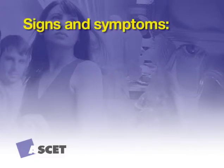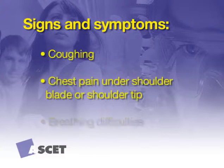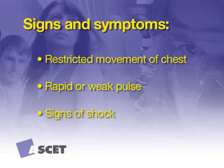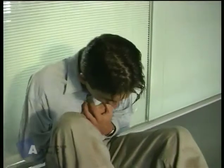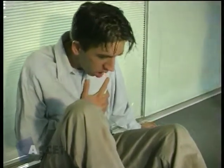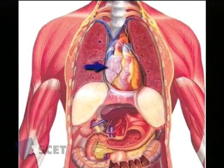Signs of pneumothorax are coughing, chest pain often under the shoulder blade and/or a sharp pain in the shoulder tip on each attempt to breathe, breathing difficulties especially the inability to take a full or deep breath, restricted or absent movement of the chest wall on the affected side, a rapid or weak pulse, and signs of shock. As the air continues to enter the pleural cavity, a tension pneumothorax can develop, and the victim may collapse and even die from the increased pressure on the heart and unaffected lung.